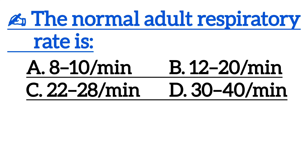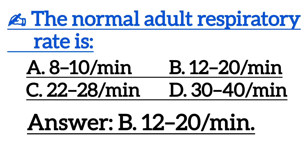The normal adult respiratory rate is — correct answer is option B: 12 to 20 per minute.